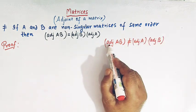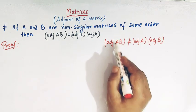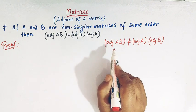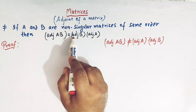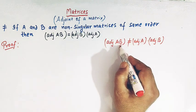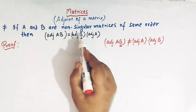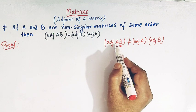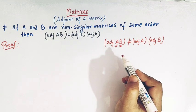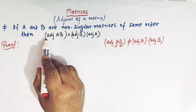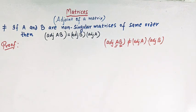So the adjoint of the product of two matrices A and B is equal to: first we write the adjoint of the second matrix, and then we write the adjoint of the first matrix. I will now prove this result. Let us start.